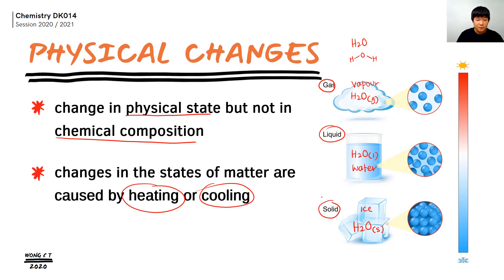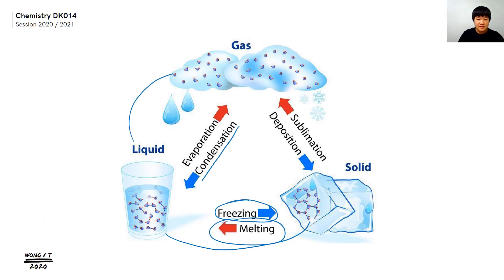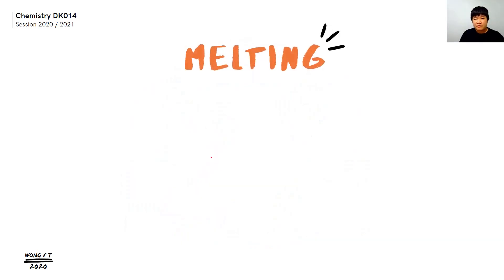Physical state can be changed by heating or cooling. When solid changes to liquid, or liquid changes to gas, that is a heating process where heat is absorbed by the particles. Vice versa, when gas becomes liquid and liquid becomes solid, that is a cooling process where heat is released. We have six physical changes to discuss: between solid and liquid we have melting and freezing; between liquid and gas we have condensation and evaporation; between gas and solid we have sublimation and deposition.